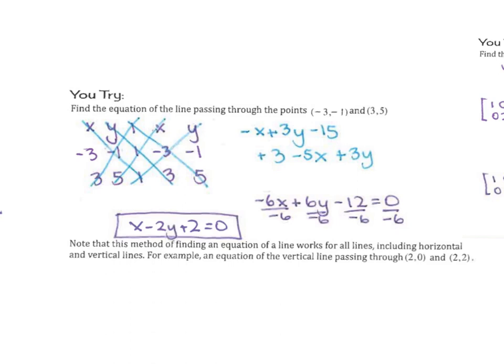And then note that this method for finding an equation of a line works for all lines, including horizontal and vertical lines. For example, the equation of the vertical line passed through 2, 0, and 2, 2. You could try that out and see that it will work out.